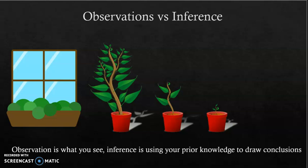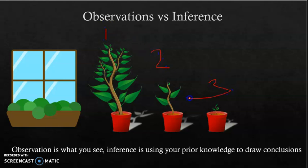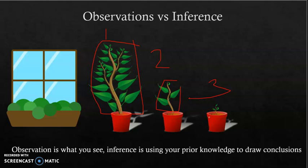In this experiment, let's pretend the researcher planted three trees — tree number one, tree number two, and tree number three — all planted at different distances from this window. My observations would be that tree one is maybe three feet high, tree number two is one foot high, and tree number three is six inches high. Those are things I can directly see and observe.